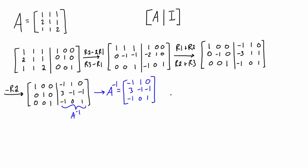And what we want to do now is just check that A times A inverse is equal to the identity matrix to make sure that we did this correctly and this is in fact the inverse.